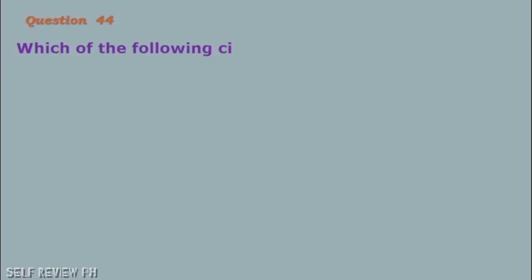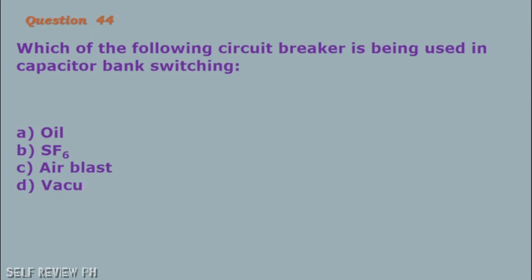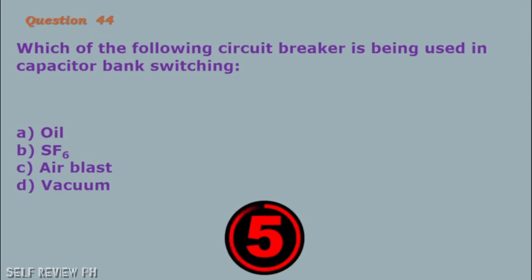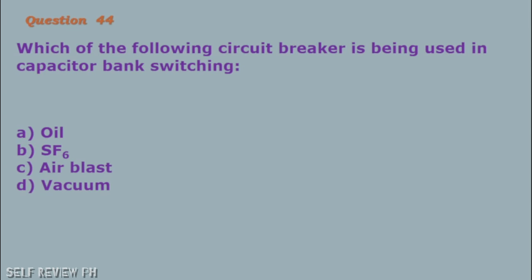Question number 44: Which of the following circuit breakers is being used in capacitor bank switching? A. Oil B. SF6 C. Air blast D. Vacuum. The correct answer is letter D, vacuum.